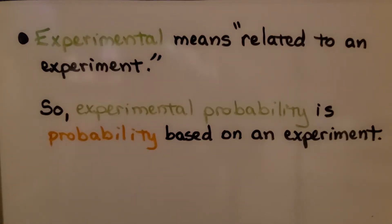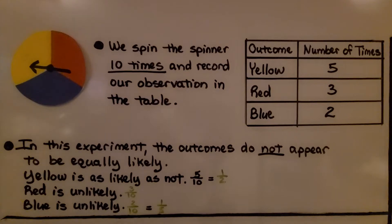Experimental means related to an experiment. So experimental probability is probability based on an experiment. Here we have a color wheel spinner. There's three sections: yellow, red, and blue.